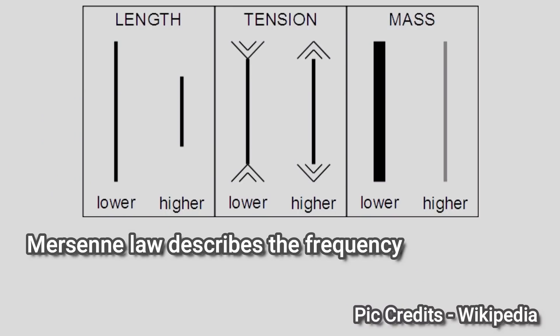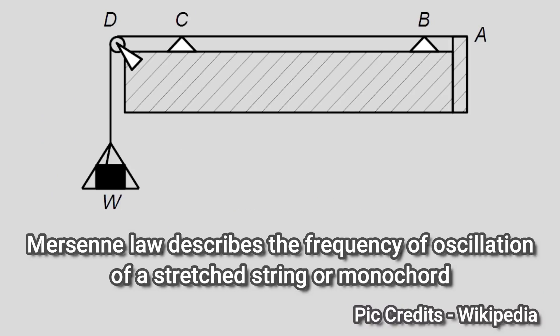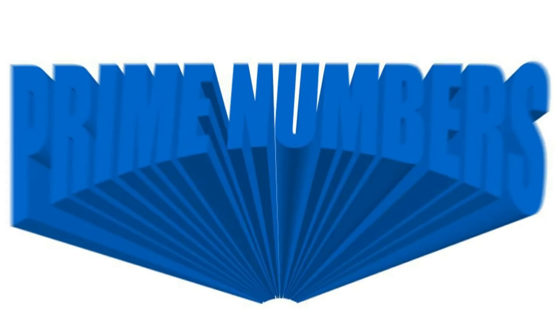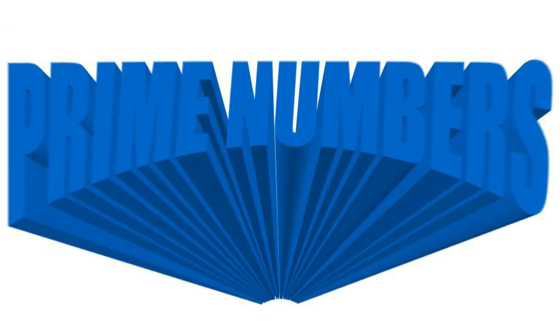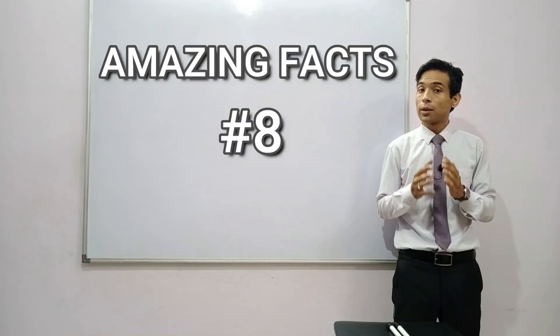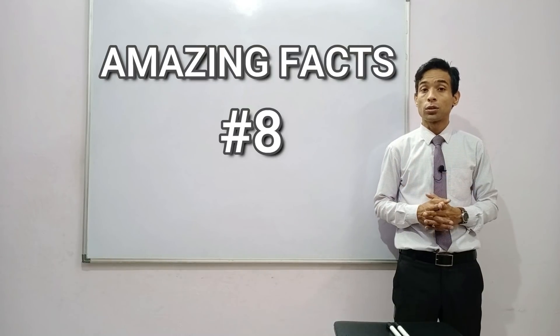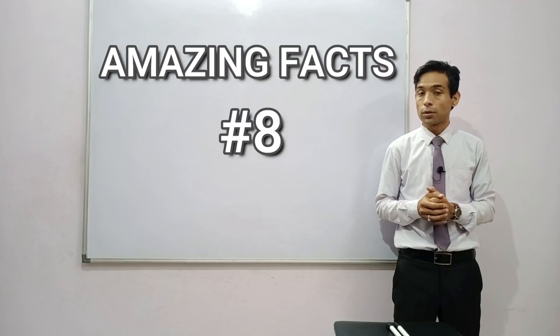He gave Mersenne's harmonic law of vibrating strings. He was also interested in prime numbers and wanted to develop a formula to discover prime numbers. Although he failed, he attracted many mathematicians to know and find out about prime numbers.